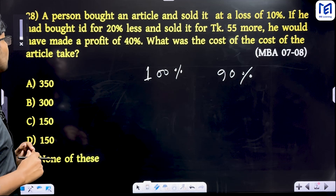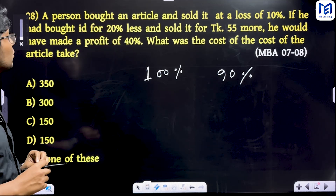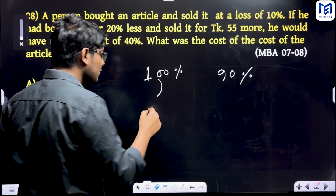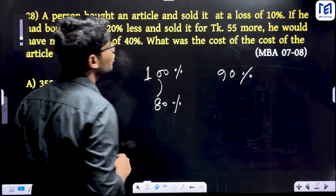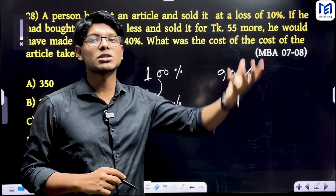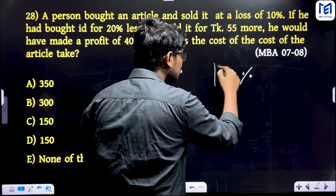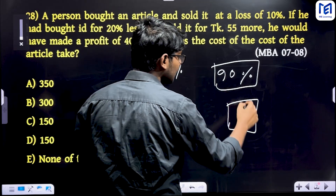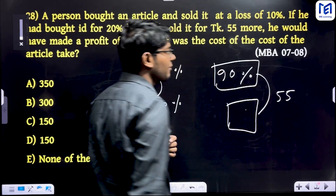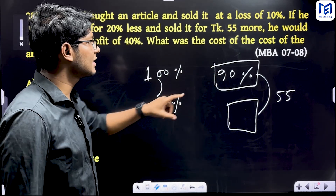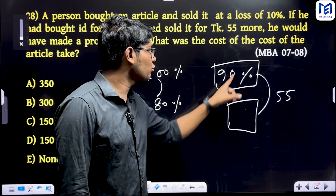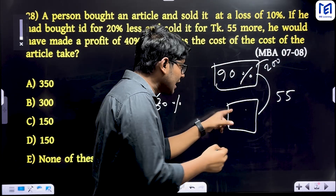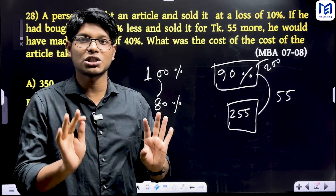If he had bought it for 20% less, the cost becomes 80% of the original. If sold, you would get more than 80%. If you had 50% less, you'd have to get more than 55%. Working through these parts: buying at 20% less means cost is 80%, and selling gives around 25% connection.